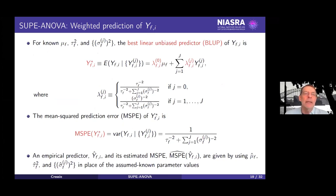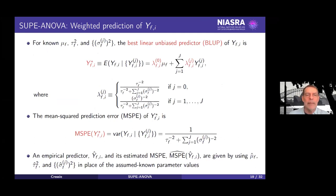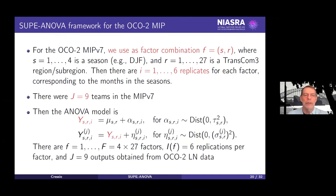The prediction is the best linear unbiased predictor (BLUP). There the climatology also gets a weight, and the individual outputs also get weights. The uncertainty quantification is now in terms of the mean squared prediction error, and we have the formulas for that.